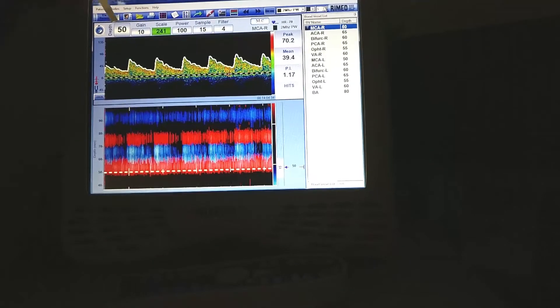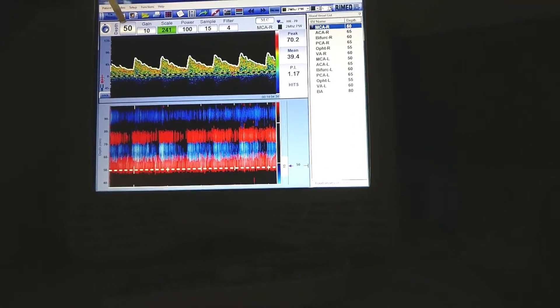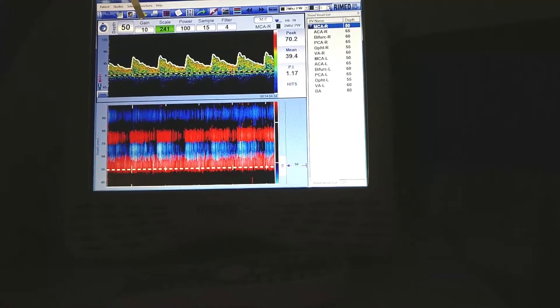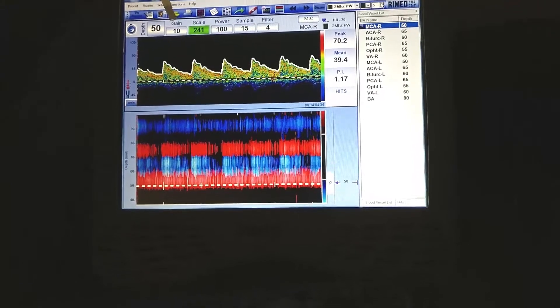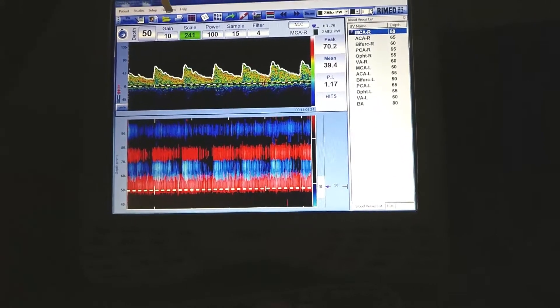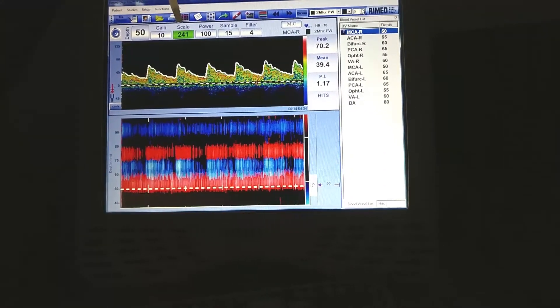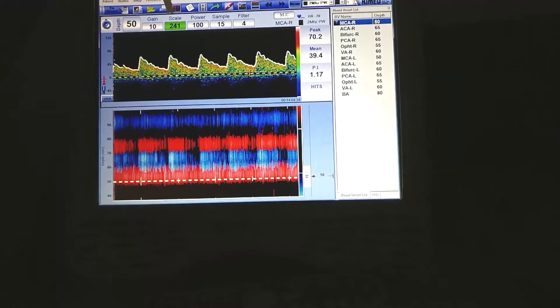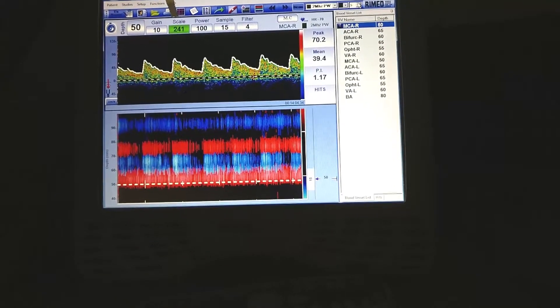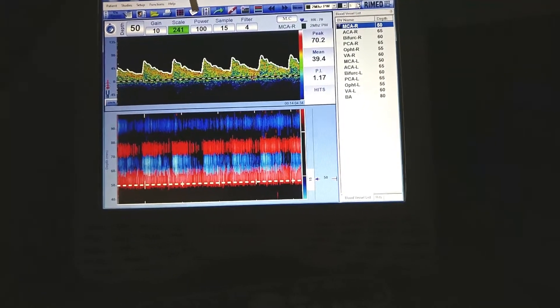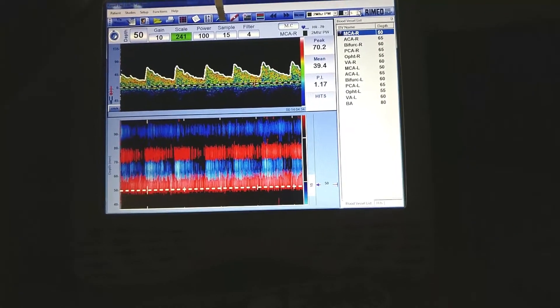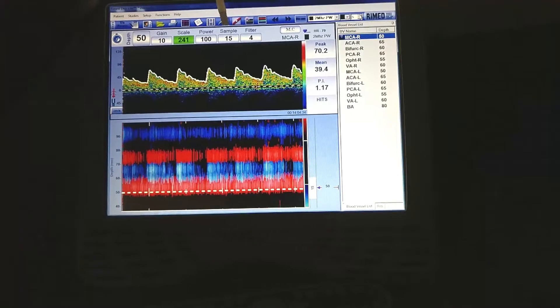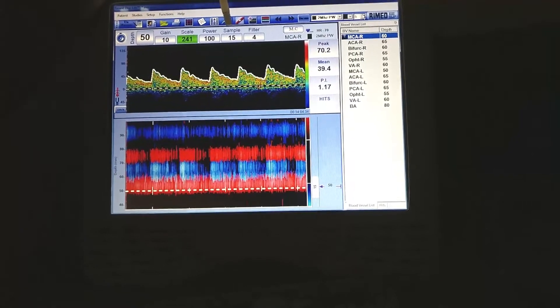Now look at the top half. The depth we know is 50 millimeter. If one increases the gain the signal increases but the background noise would also increase. One can adjust the scale to increase or decrease the height of the peak systolic velocity. Power determines the strength and the sample determines the volume of tissue or the volume of space that is assessed.